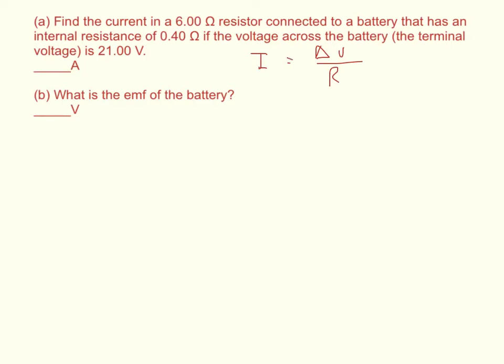And so the current is equal to 21 over 6, which is 3.5 amps.